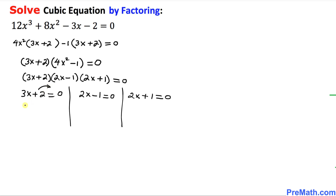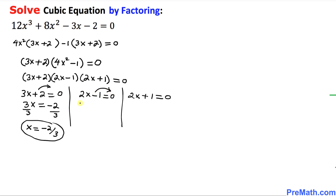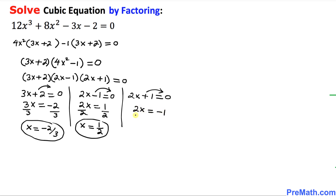Moving the 2 to the other side gives 3x equal to negative 2. Dividing both sides by 3, x equals negative 2 thirds as one solution. Likewise, moving the negative 1 gives 2x equal to positive 1, and dividing by 2, x equals 1 over 2 as our second solution. Finally, moving the positive 1 gives negative 1, and dividing both sides by 2, x equals negative 1 over 2 as our third solution.